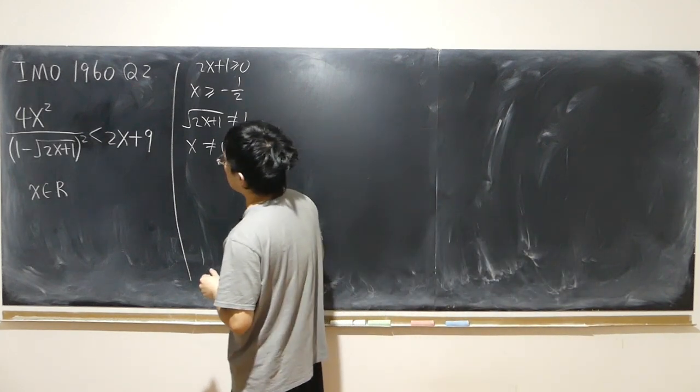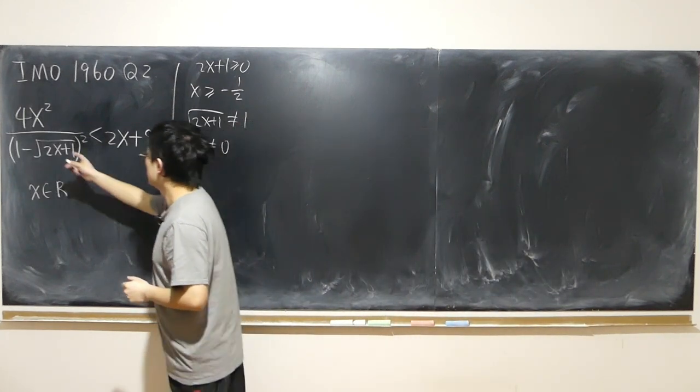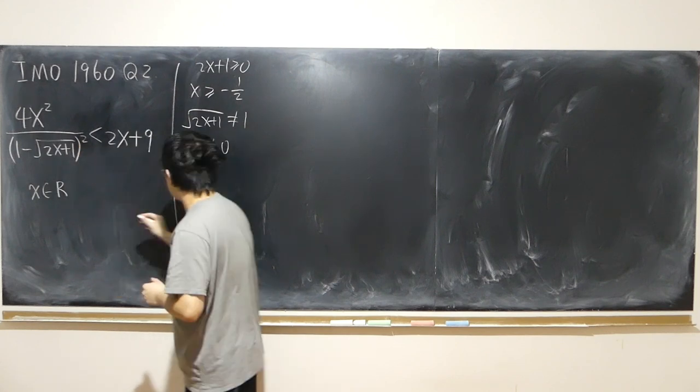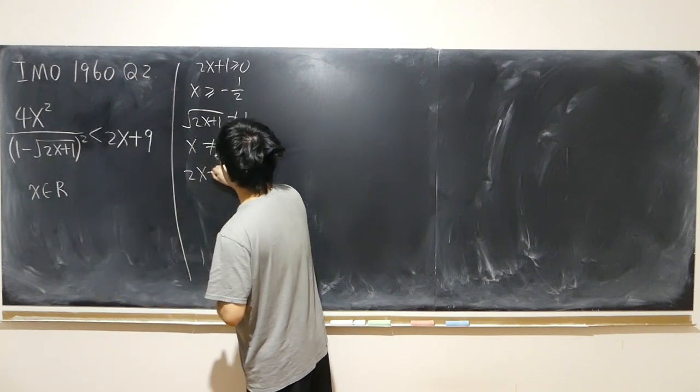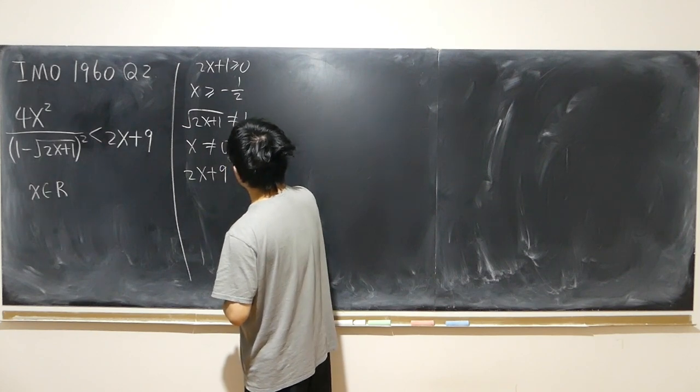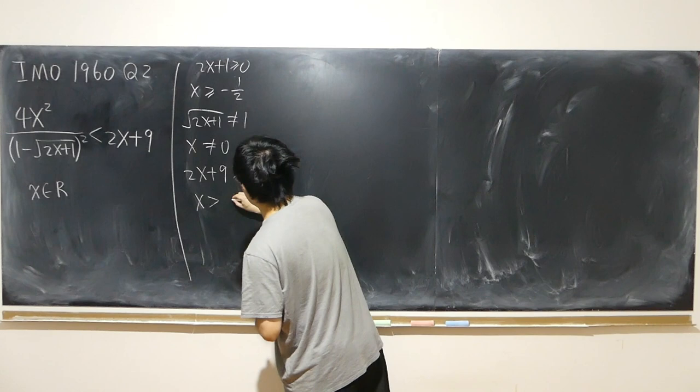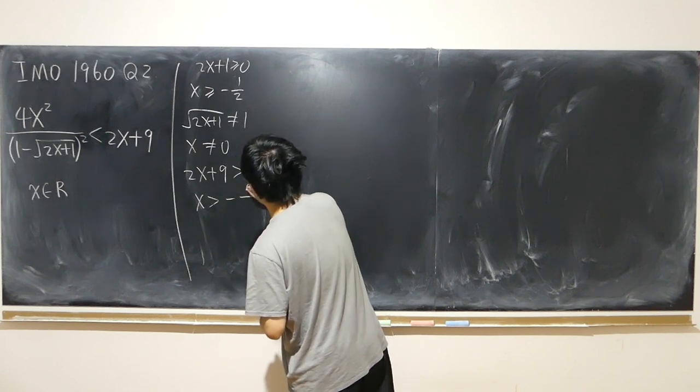Then I noticed that the left hand side is non-negative, so right hand side bigger than that, so right hand side also strictly positive, so x strictly bigger than negative 9 over 2.